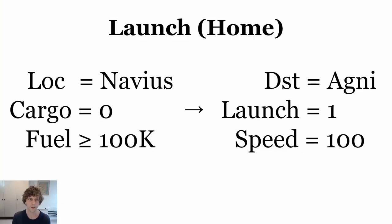Our launch criteria: we're going to start by verifying that we are on our home planet — in this example Navius — that our cargo is empty, and that we have enough fuel for our trip. We need all three of those things to be true before we launch. To launch we need to send three signals: we need to send our destination — in this example Agni — a signal to launch, and then set the target speed of the spaceship to engage the engines.